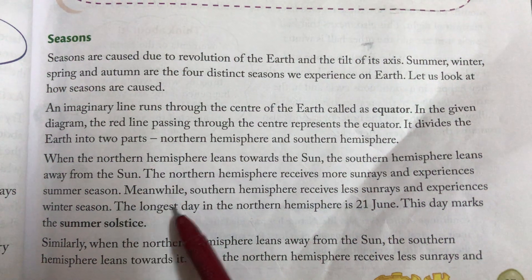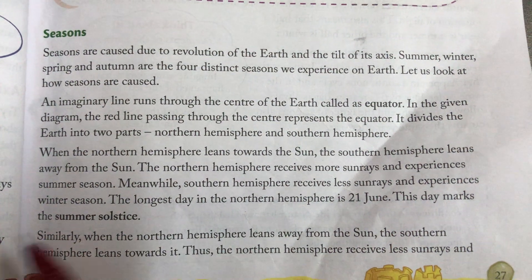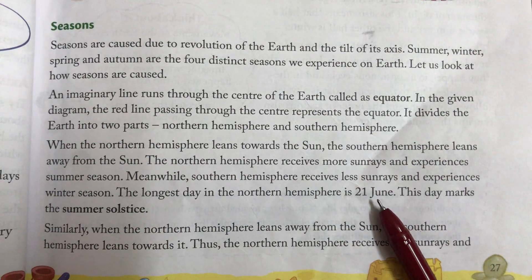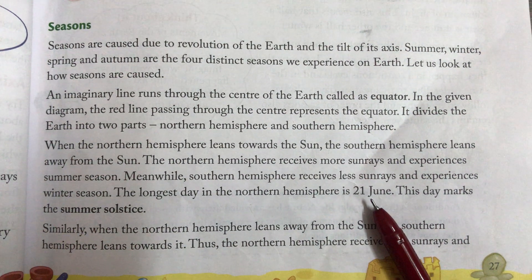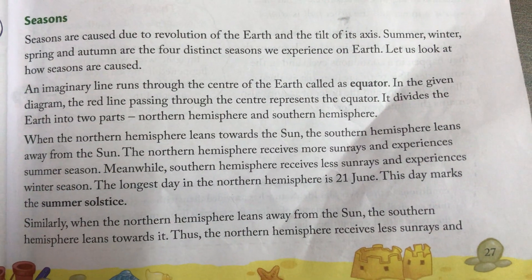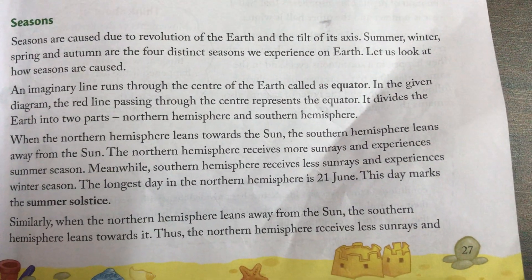The longest day in the Northern Hemisphere is 21st June. This day marks the summer solstice.